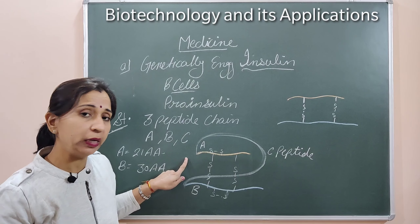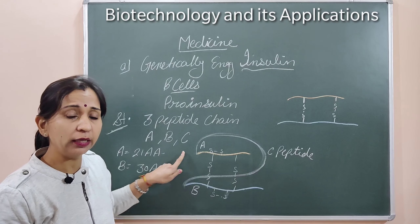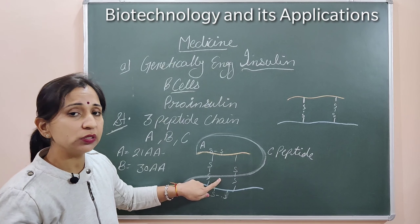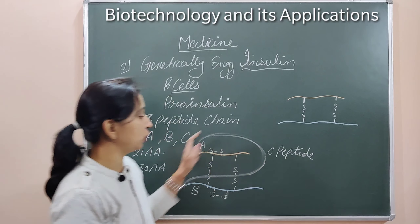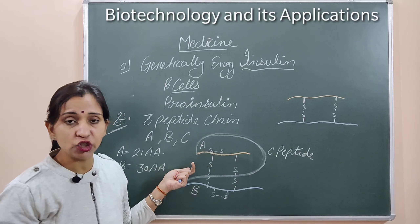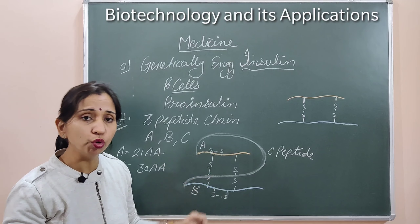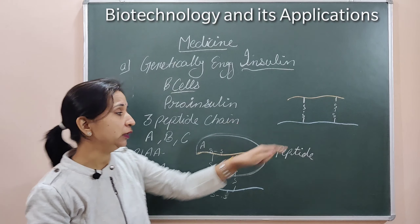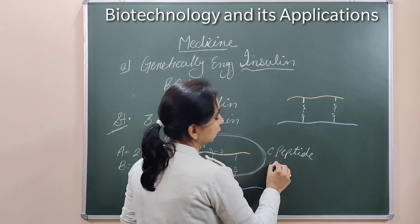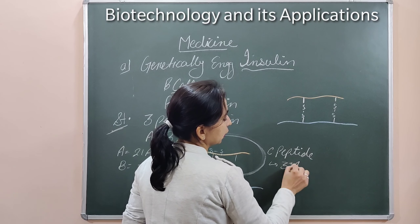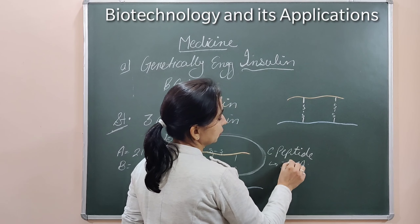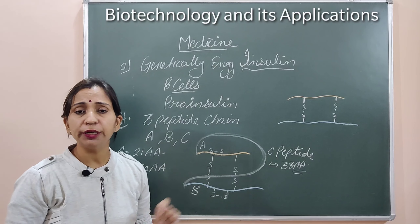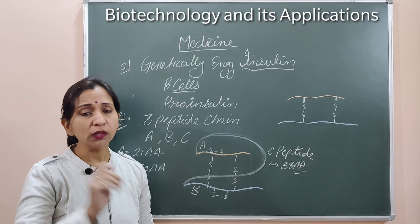This is the structure of pro-insulin where three chains are present — chain A, chain B, and chain C. When it converts into mature insulin, the C-chain is removed and the insulin becomes active. The C-chain is made up of 33 amino acids. In this way, insulin is converted into mature insulin.